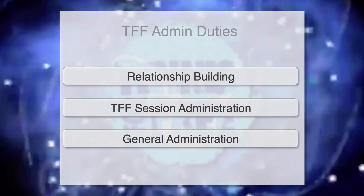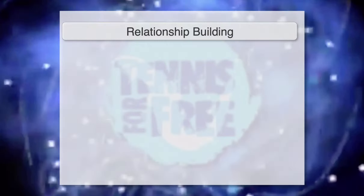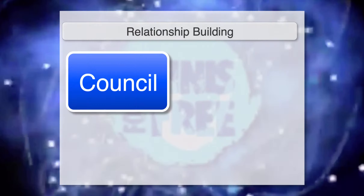The first area is relationship building, starting with the council. Every council will have a linked person to the scheme, and it's important that that person is actively engaged in the Tennis for Free scheme. Developing a relationship with this person or the council in general is really key — they'll be able to help with promotion of the session and other promotional angles too.